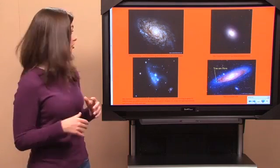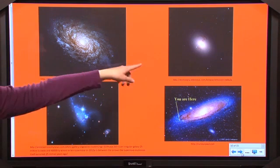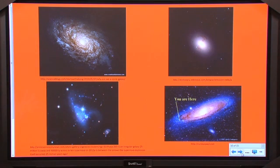Some galaxies are spiral shaped, like this one up here. Other galaxies are ellipse shaped, like this one over here. Some galaxies don't really have any shape at all, like this one down here.